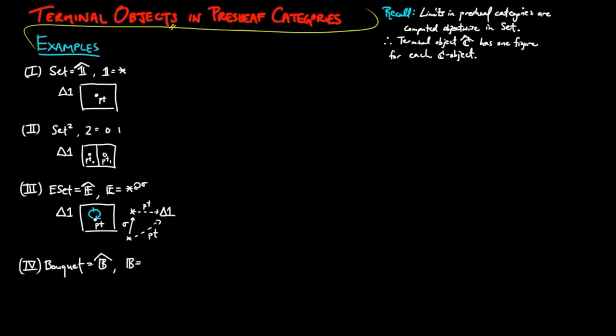For bouquets, the terminal object consists of one vertex and one petal. In the category of graphs, the terminal object is a graph with one vertex and one arc, necessarily a loop.